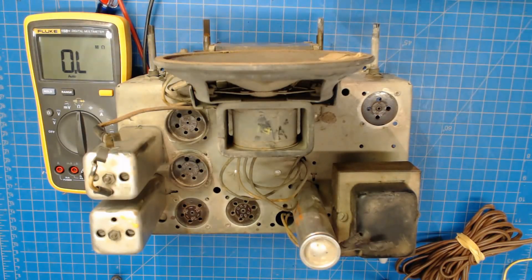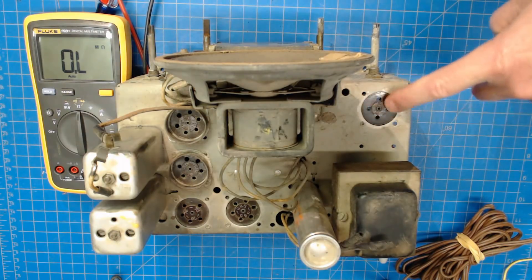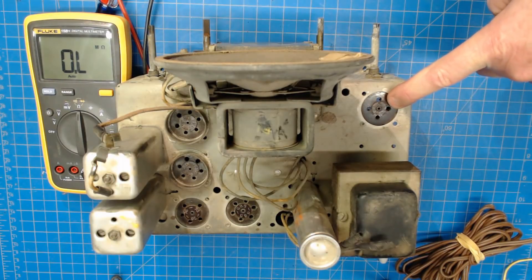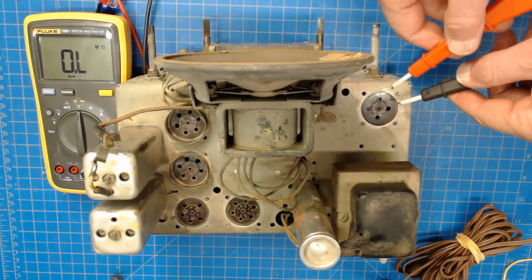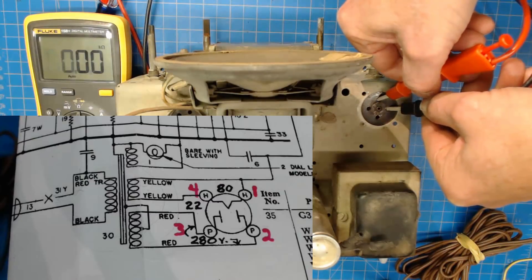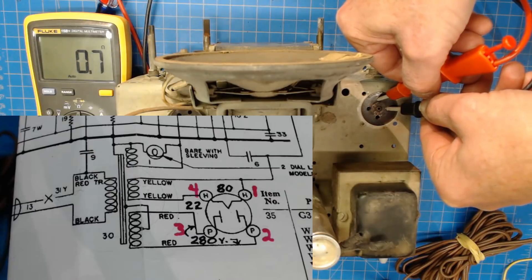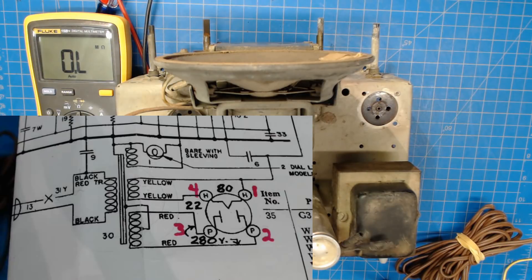Now, remember we were going to check the filament, the rectifier filament winding, which should be one or less. This is the rectifier tube, 80. The big pins are the heater pins. So we'll just stick that in there. We're looking about 0.7 ohms, 0.6. That's in line with what we were talking about.